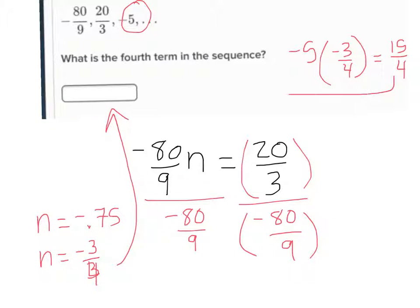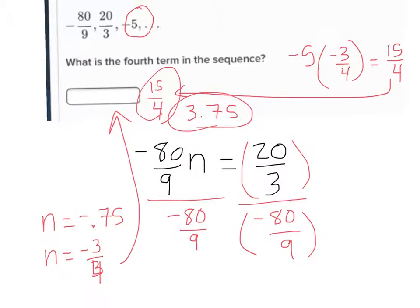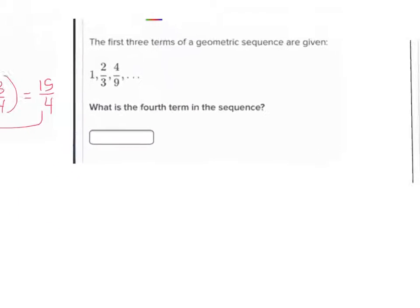And that gives me 15 over 4 as my next term. So I can put in this blank right here, 15 over 4. What's that as a decimal? 3.75. So I could put in, since it's a terminating decimal, I could put 3.75. Either of these would work.